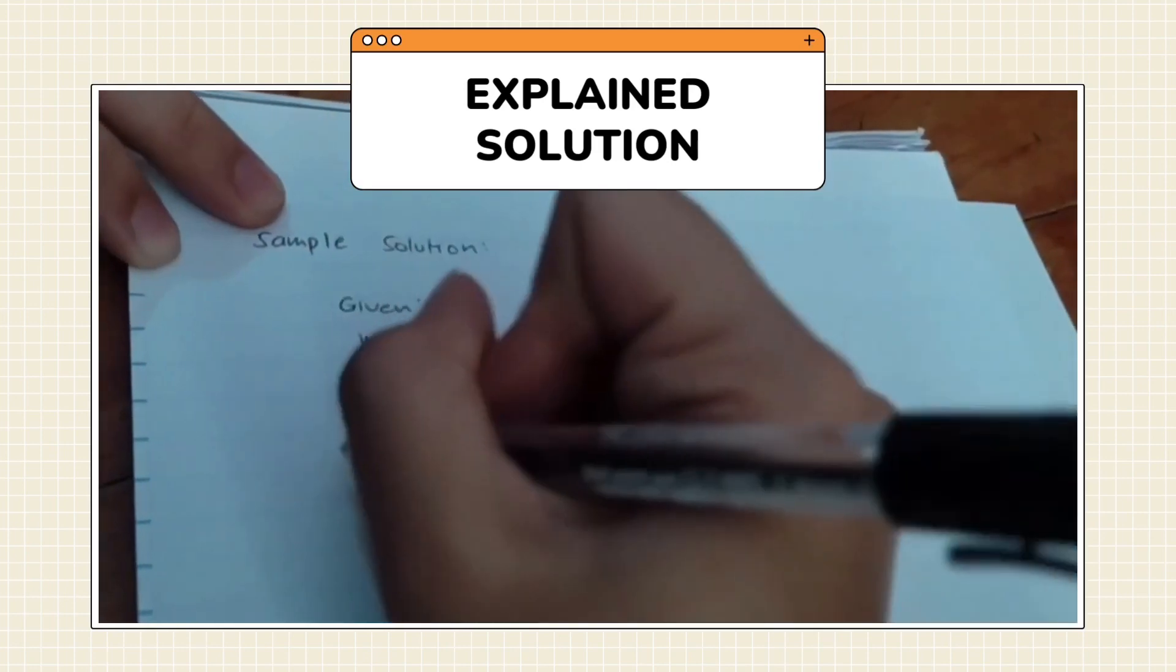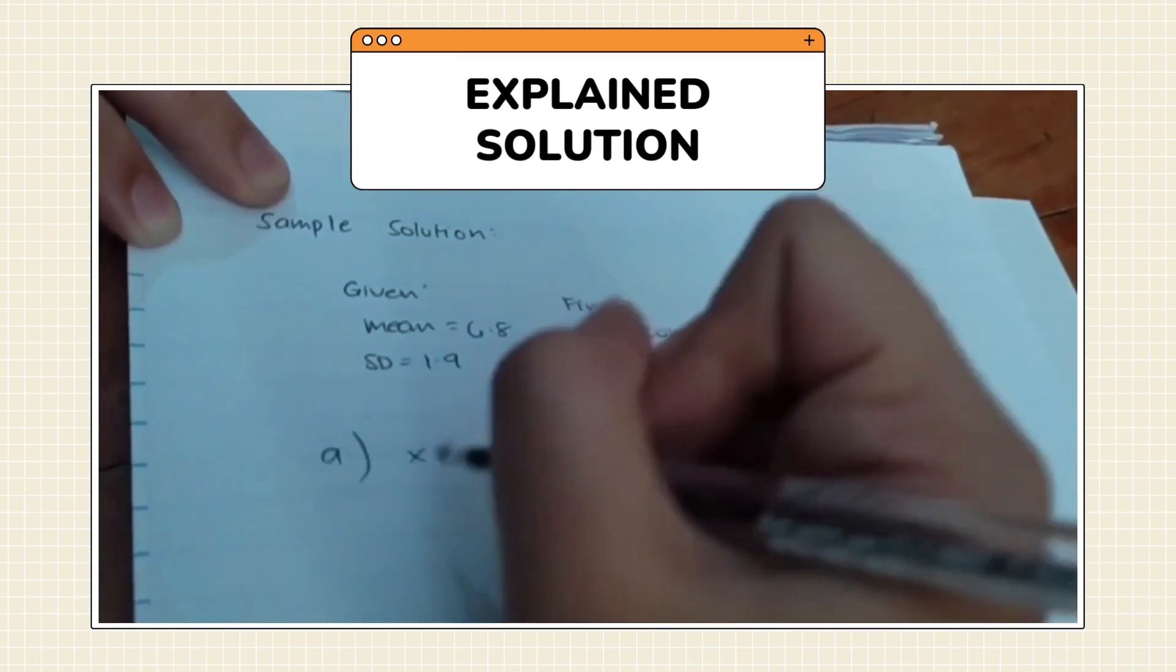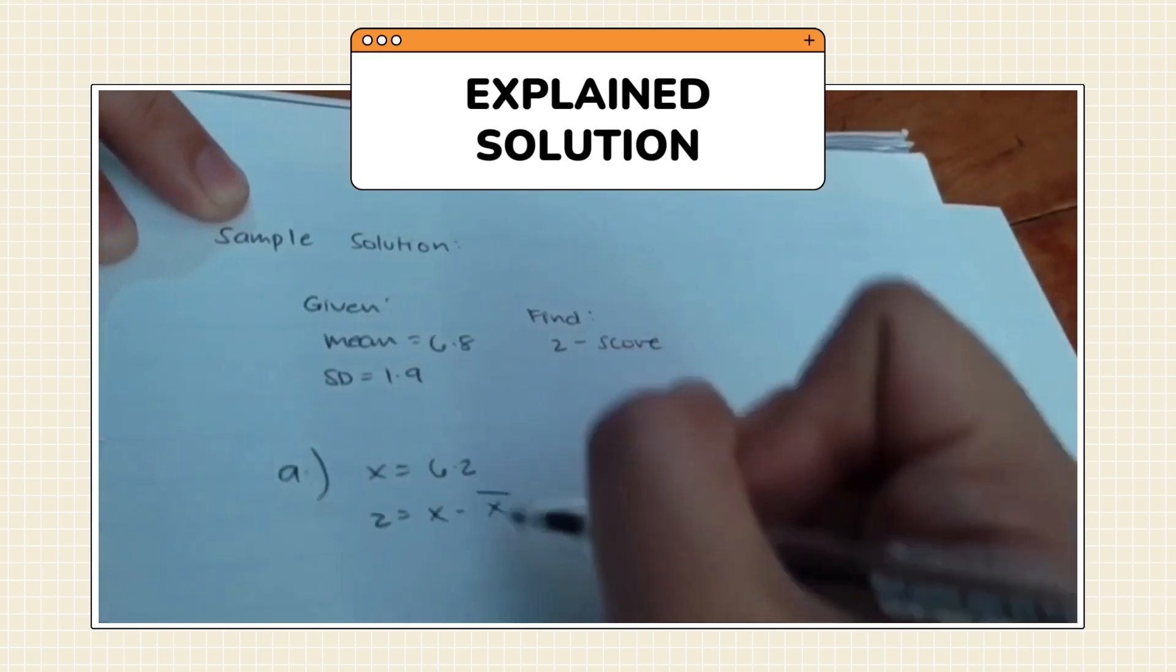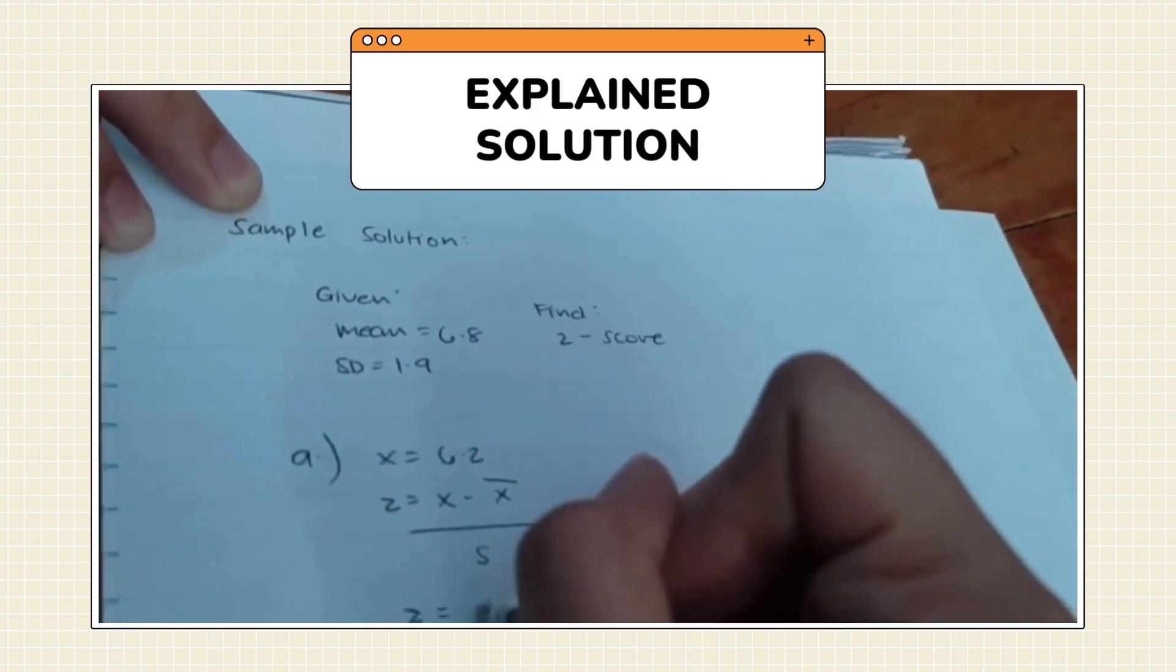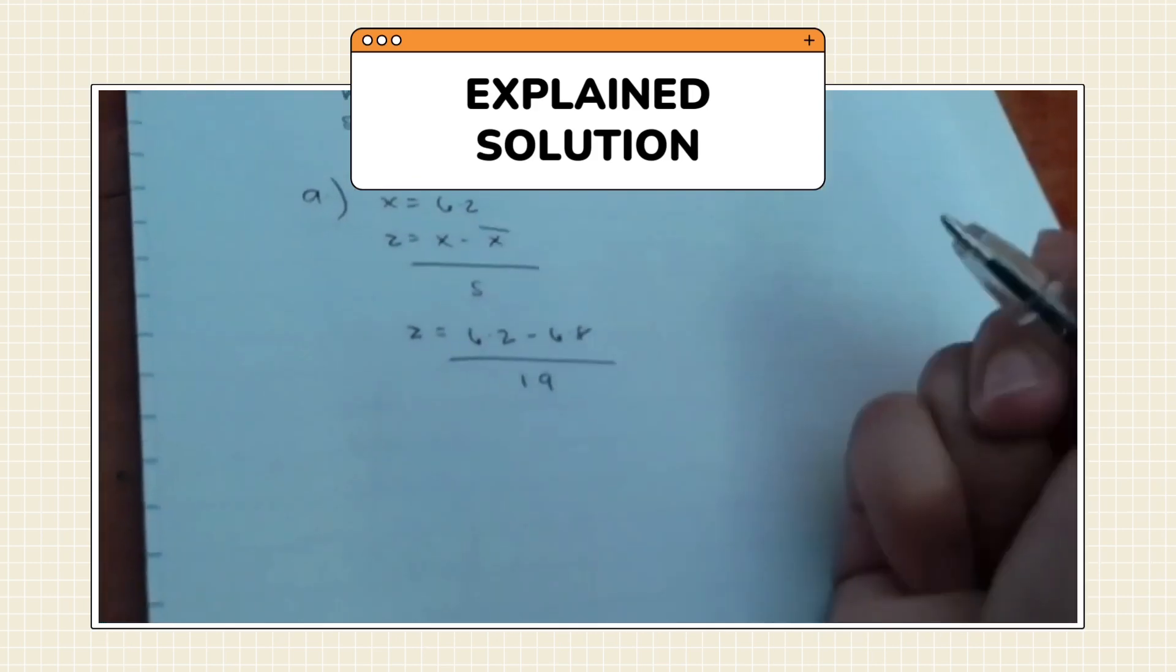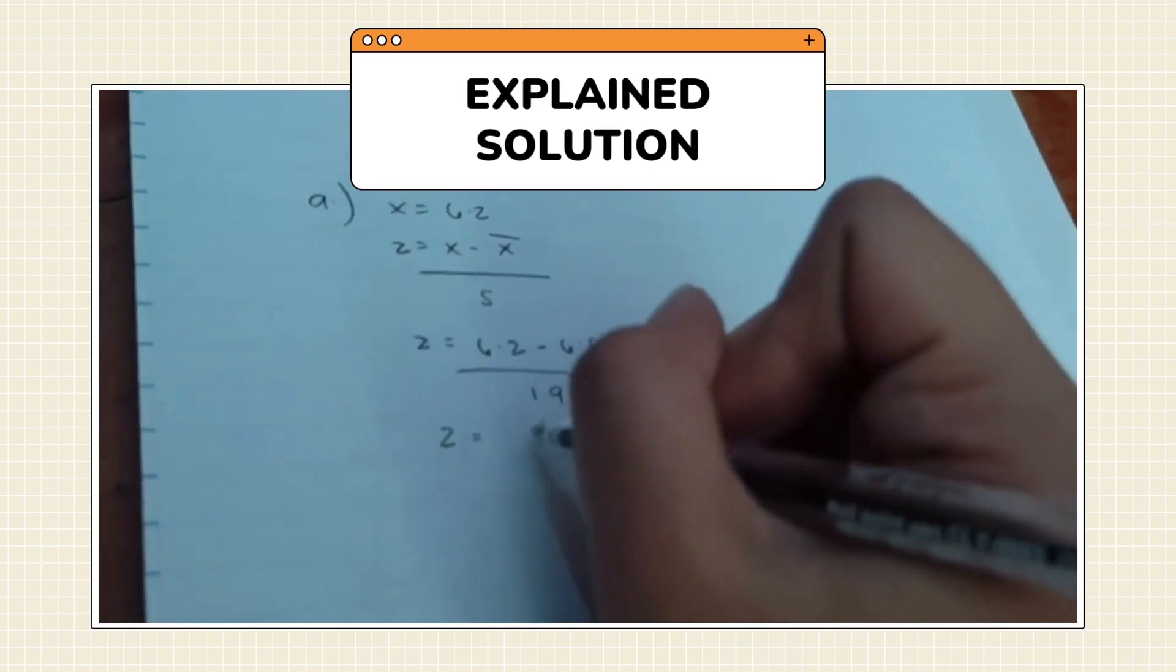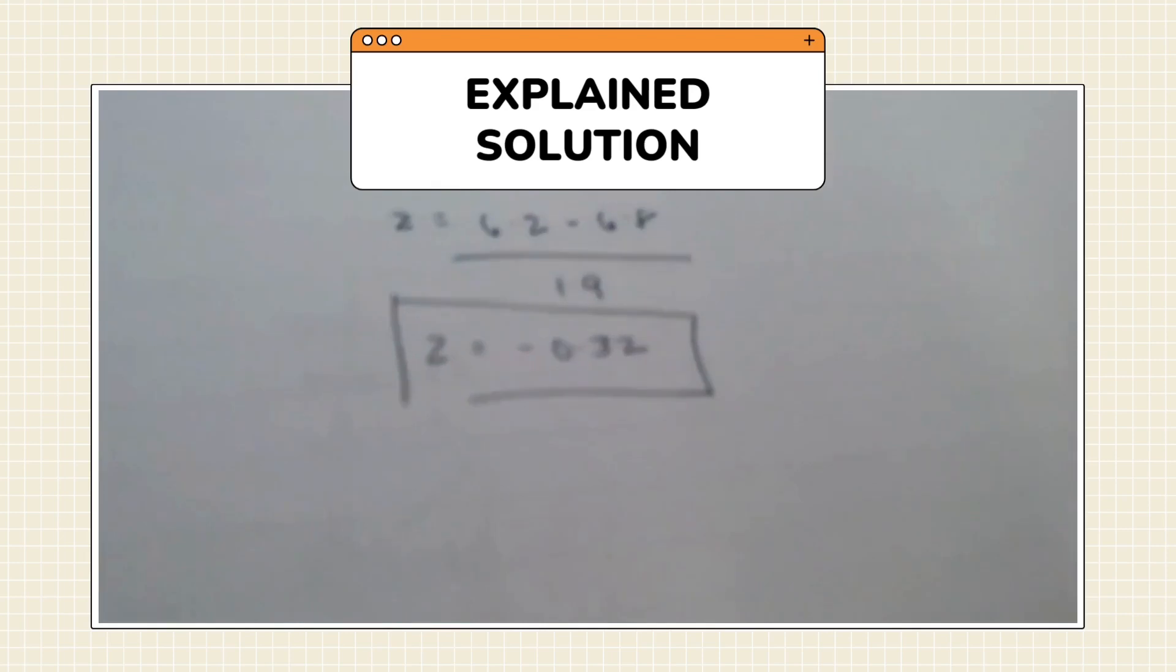What I did here is I copied the given values and the value that we will find. After that, I started at letter A and had the value of X, which is 6.2. You would just follow the formula. Substitute first the given, subtract these two, and divide it to our standard deviation. And our first answer on our z-score for our letter A is negative 0.32.